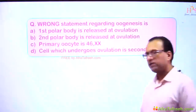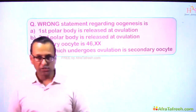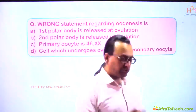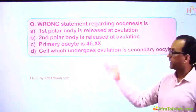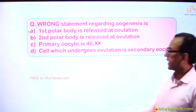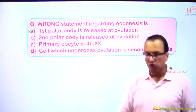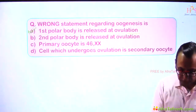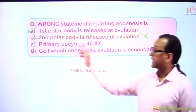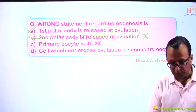There is a question asking for the wrong statement regarding oogenesis. We have seen the first polar body is released at — or just before — ovulation. Some books will say at ovulation, no problem. The second polar body is released after fertilization. So the statement that the second polar body is released before fertilization is the wrong statement and that is our answer.